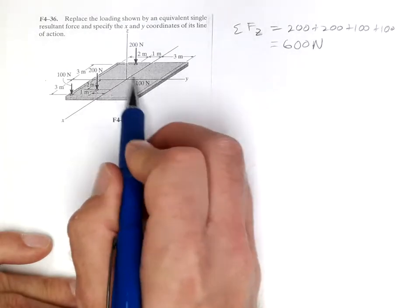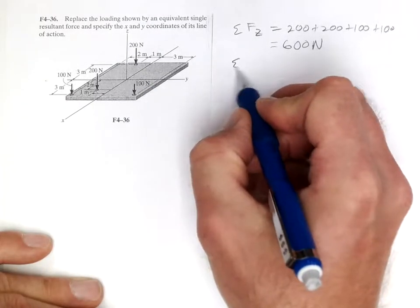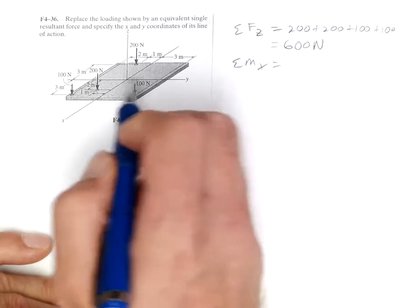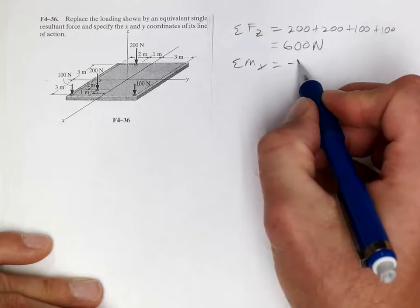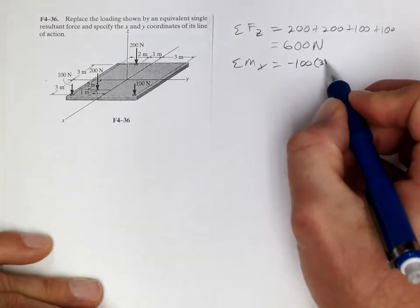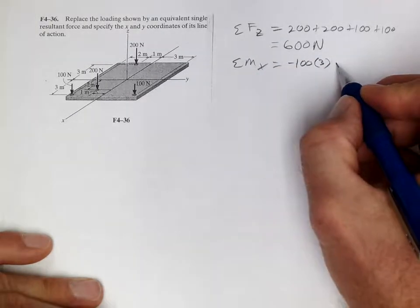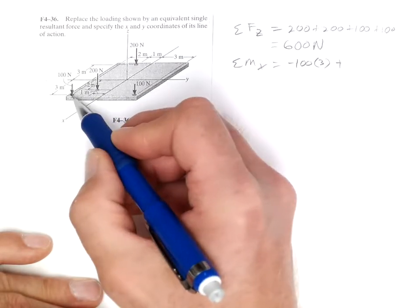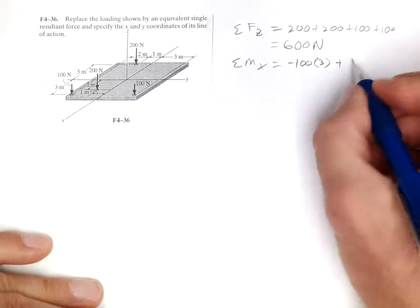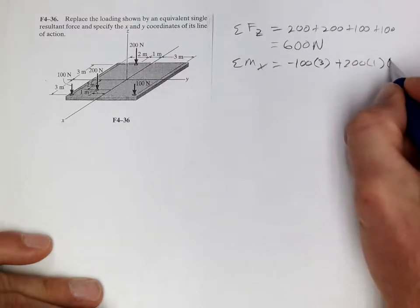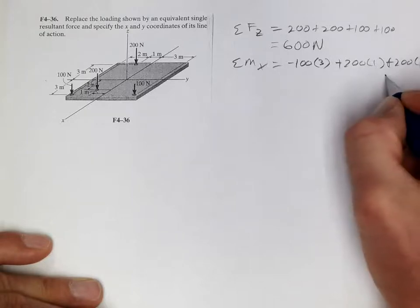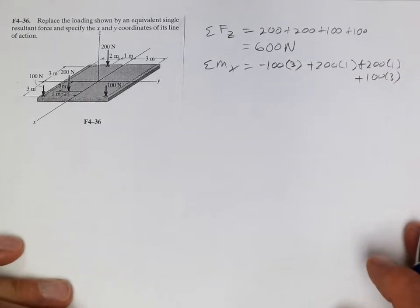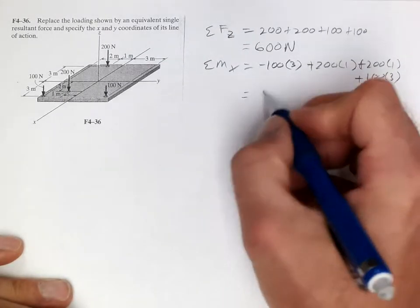Now let's see how it rotates about x and y. So if we sum the moments about x right here, we've got negative rotation being caused by this 100. So negative 100 times 3, 3 meters there, plus 200 times 1, plus 200 times 1, and plus 100 times 3. And if we sum that up, we get 400.